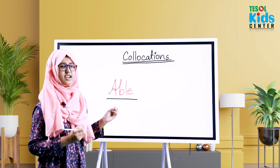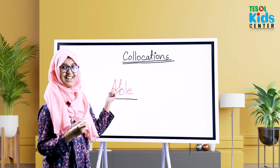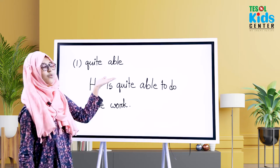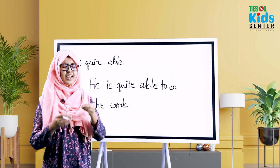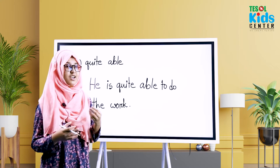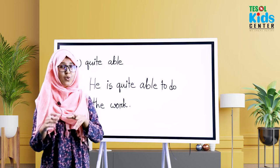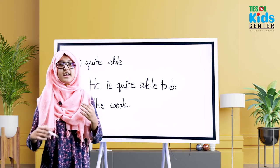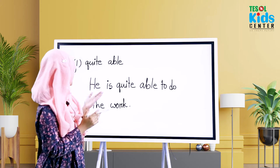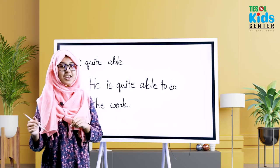So 'able' is an adjective. Let's see what we can say. The first collocation is 'quite able.' For example, if you say 'he is able to do it,' how much able is he? Like if I say 'he is good at drawing,' you can say 'he is quite good at drawing,' meaning he is more than good. So we can say 'he is quite able to do the work,' which means he is more than able to do that work.